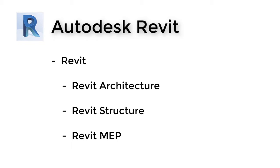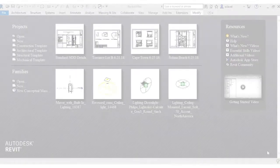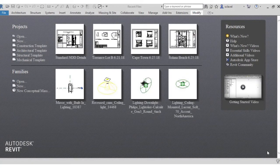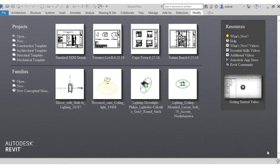I'll be using Revit 2018, which means all the files included in this course are also 2018. While they can't be saved to previous versions, they can always be upgraded for future versions. Before we really dive in — which we'll start in the next video — I want to quickly go over opening a new project so you can start playing around in the software and familiarize yourself with the layout before we cover the core functions.